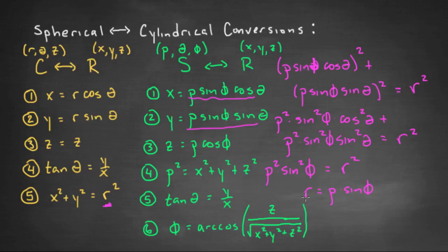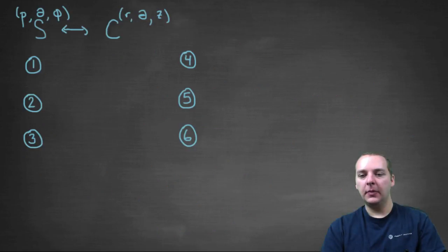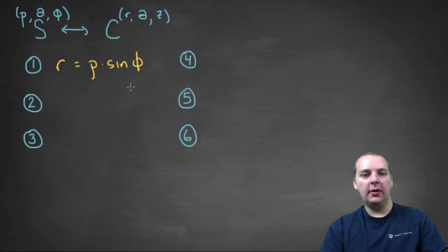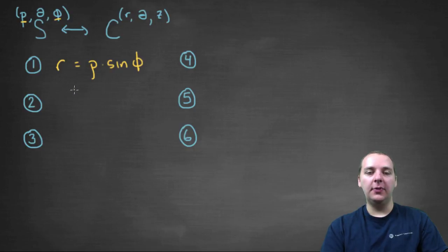So there's our first conversion: r equals rho times sine of phi. Assuming r is positive and rho is positive, and since phi ranges from zero to 180 degrees where sine is already positive, we can take the square root of both sides. Given a rho and a phi, we can find r. That was the long one — if you've made it through that one, congratulations! The other five are very fast and very easy.